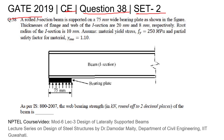A rolled I-section beam is supported on a 75 mm wide bearing plate. The thickness of the flange and web of the I-section are 20 mm and 8 mm respectively. The root radius of the I-section is 10 mm. Assuming metal yield strength is 250 MPa and partial safety factor γM0 is 1.1.